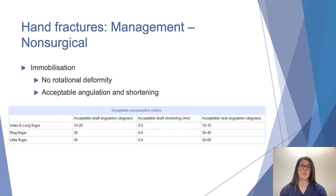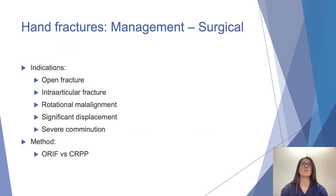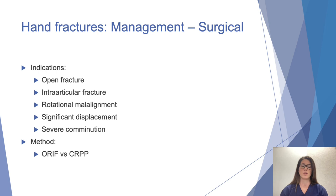Management for hand fractures includes surgical and non-surgical options, depending largely on the degree of angulation, rotation, and shortening of the digit. As a general rule, an extra-articular fracture with less than 10 degrees of angulation and less than 2 millimeters of shaft shortening with no rotational deformity may have non-surgical management. Surgical indications include open fractures, intra-articular involvement, rotational malalignment, significant displacement, or severe comminution. Surgical options include ORIF or closed reduction with percutaneous pinning.